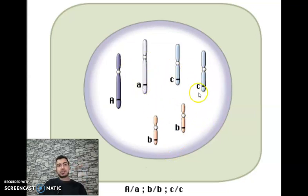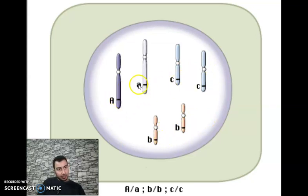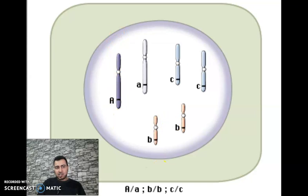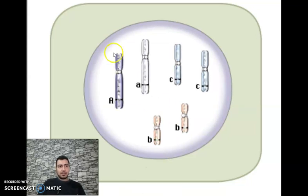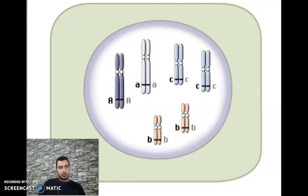This is a cell with 2n equal to 6 — there are six chromosomes: two large, two medium, two small. Each carries genetic information labeled A capital, A small, B small, C small. During interphase, the genetic information is duplicated during S phase — each chromatid becomes two chromatids.